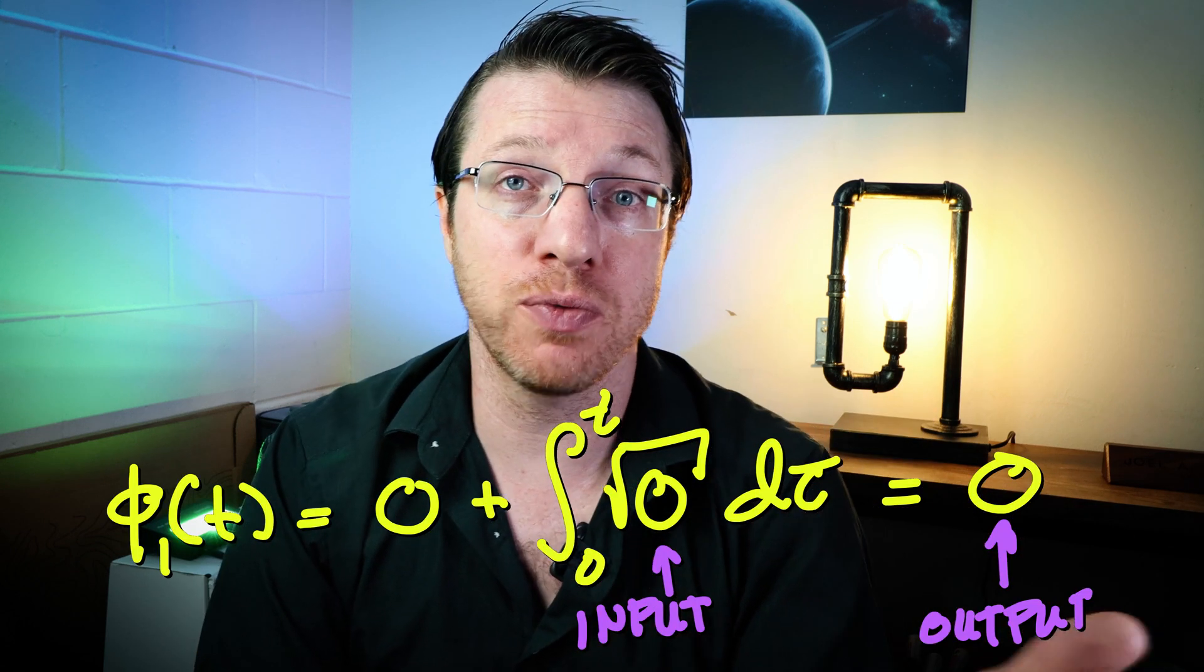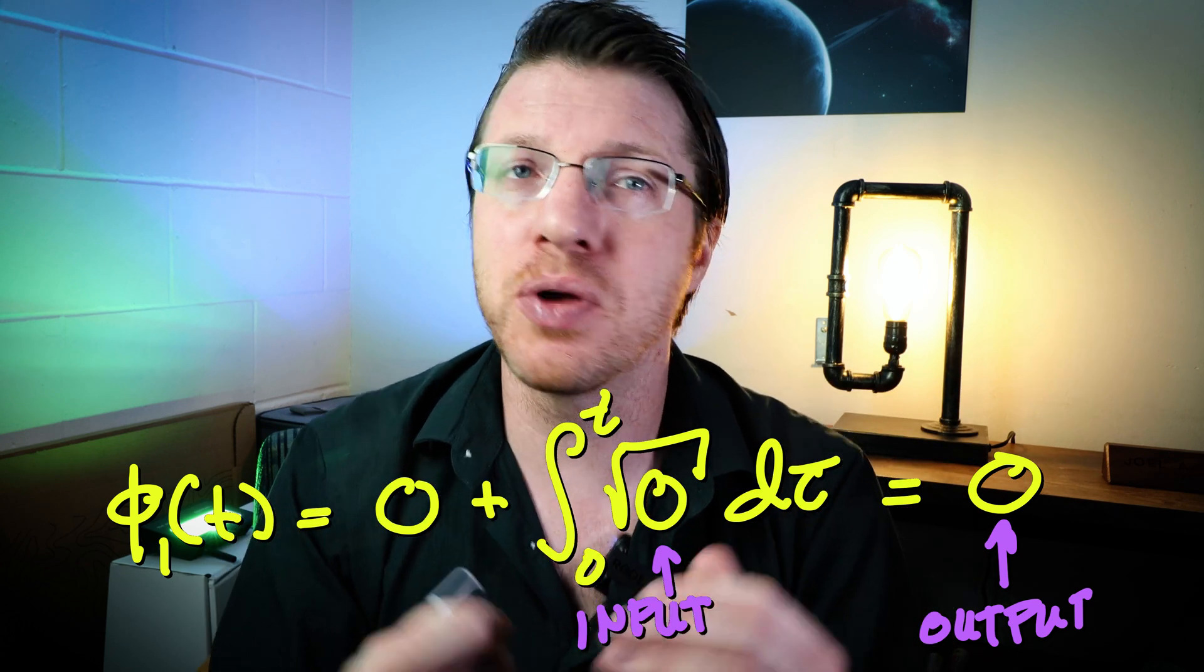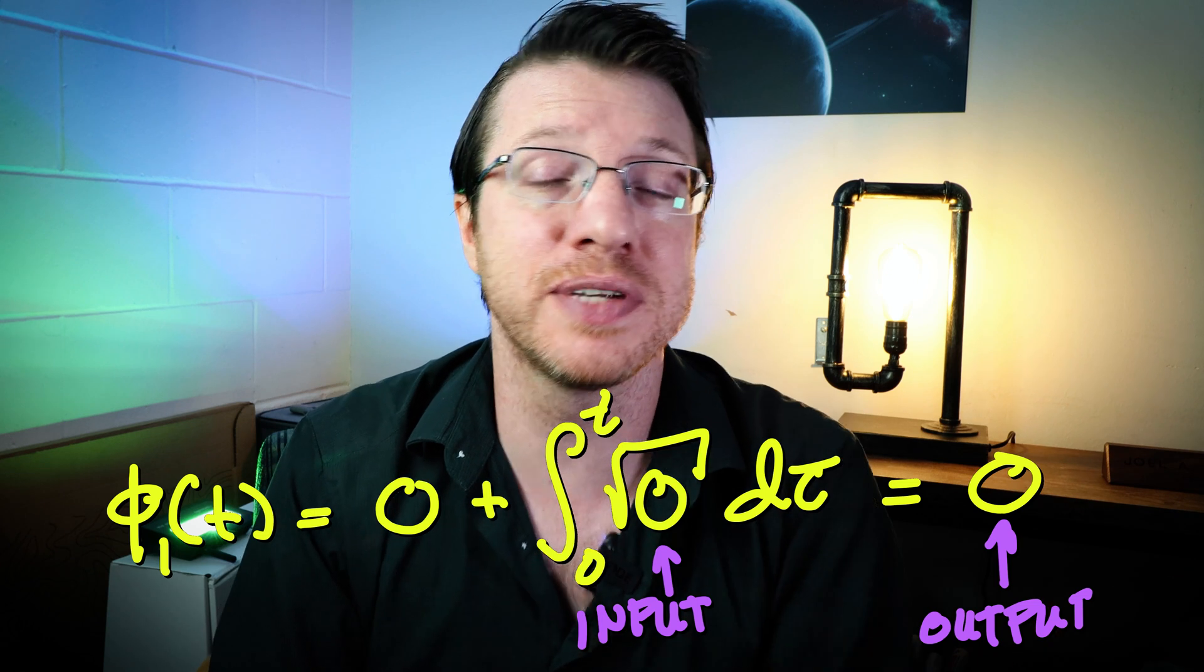and we have thus found a fixed point right away. This is indeed a solution to our differential equation. But no matter how many times we iterate here, we aren't going to leave and find the other solution of t² over 4.